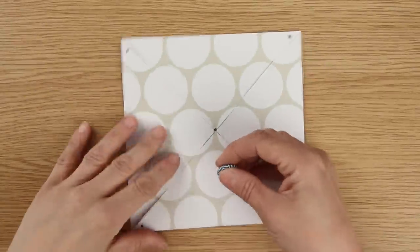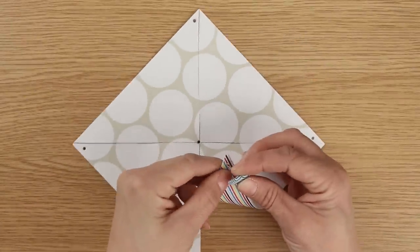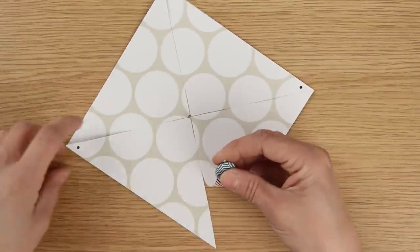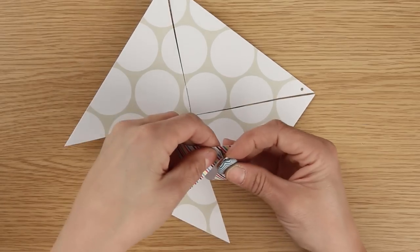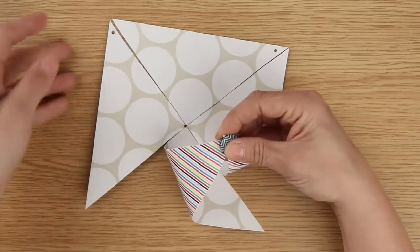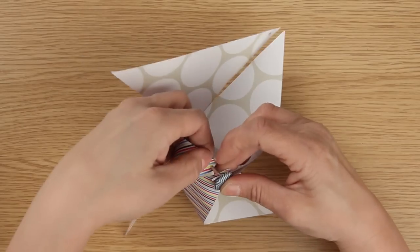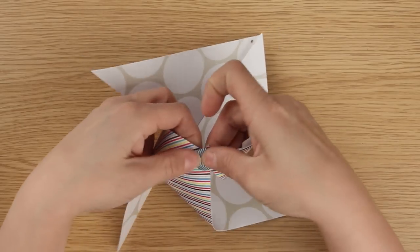Next we need a brad and we're going to pop that through each of the holes in turn. Just fold the ends into the center and pop the brad through.